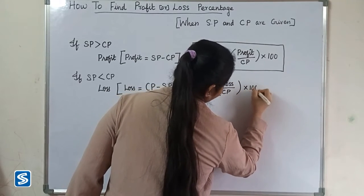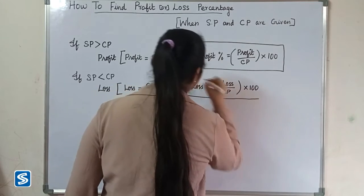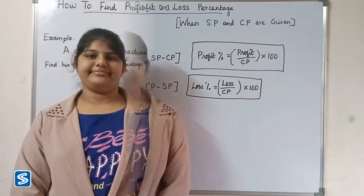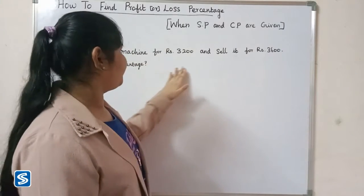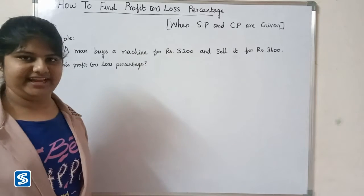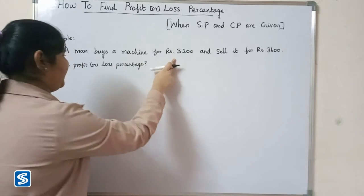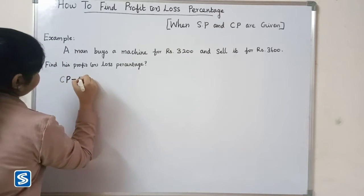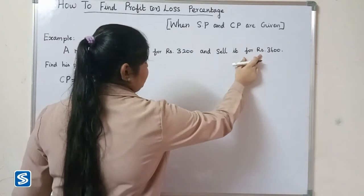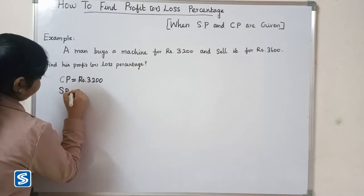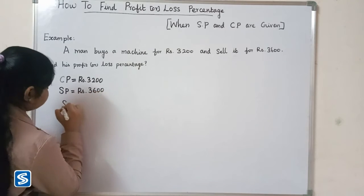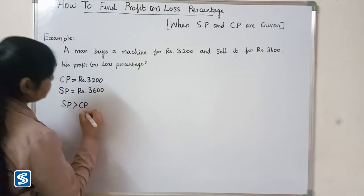Now we will take some examples. A man buys a machine for rupees 3200 and sells it for rupees 3600. Find his profit or loss percentage. Here cost price is rupees 3200 and selling price is rupees 3600. Since selling price is greater than cost price, we have a profit.